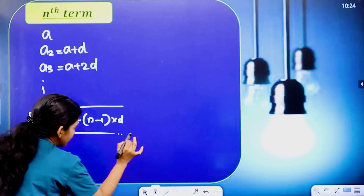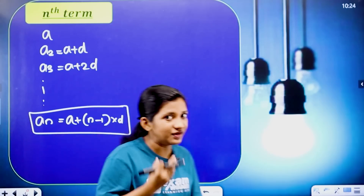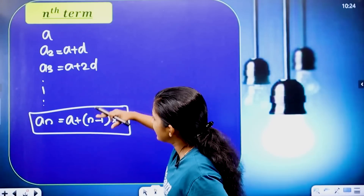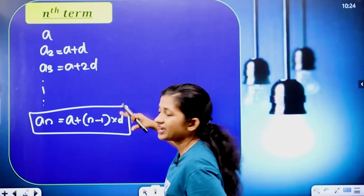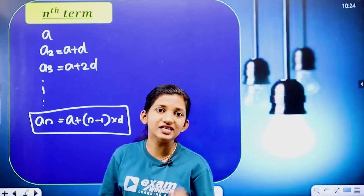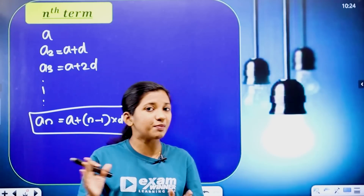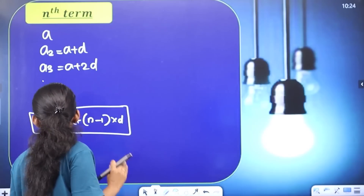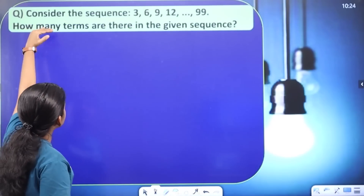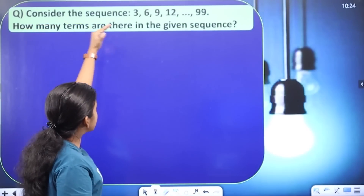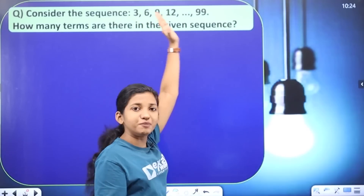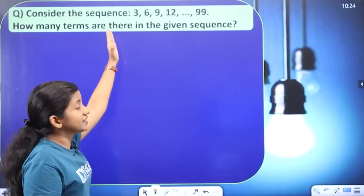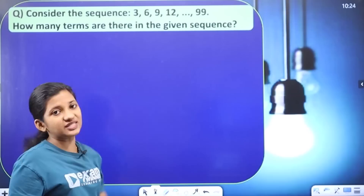In an arithmetic progression, an = a + (n − 1) × d. Using this equation, you will find the answer to problems in this chapter. First problem: Consider the sequence 3, 6, 9, 12, ... up to 99. How many terms are there in the given sequence?